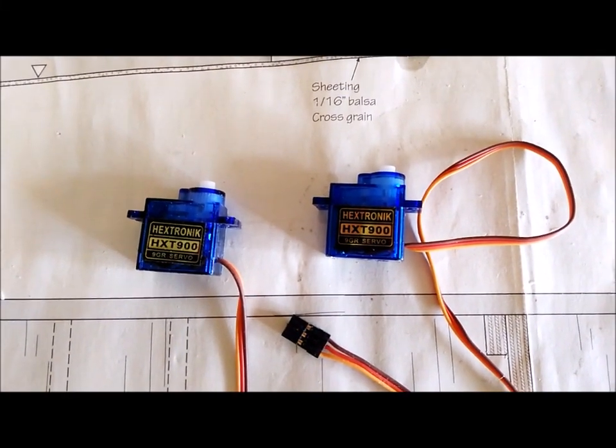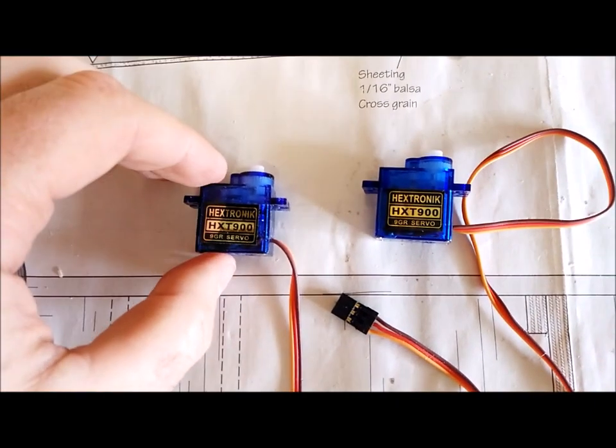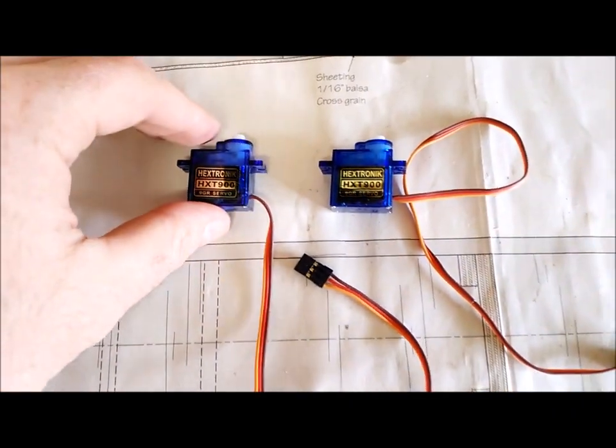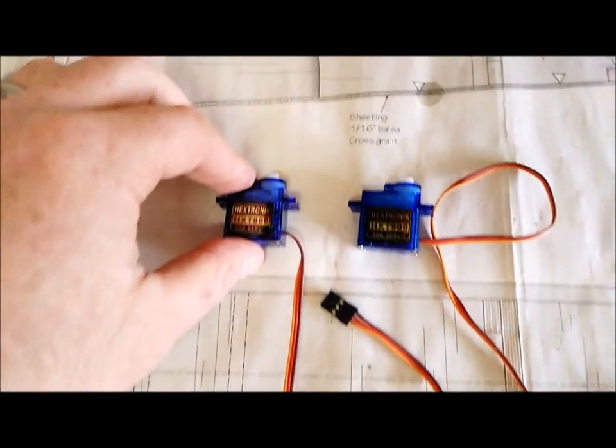So these are the two servos that I have bought. They're micro servos, 9 grams. They're incredibly small, incredibly light and very suitable for the plane that I'm building.